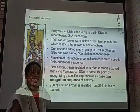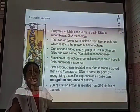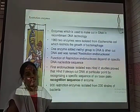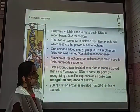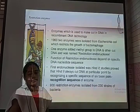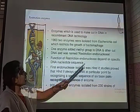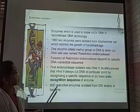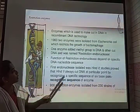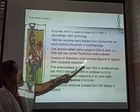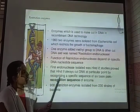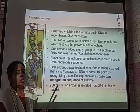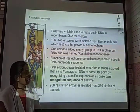Restriction enzymes help in cleaving double-stranded DNA at a specific location. These restriction enzymes are classified into two types: endonucleases and exonucleases. Restriction endonucleases cleave the double-stranded DNA at the middle location, while exonucleases cleave at the terminal location.